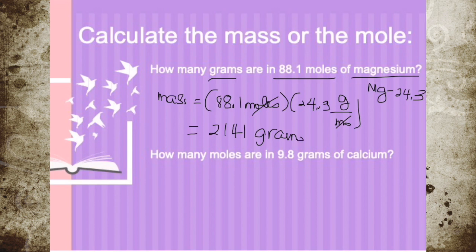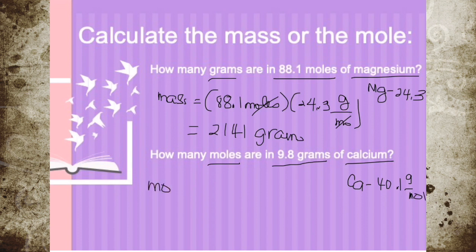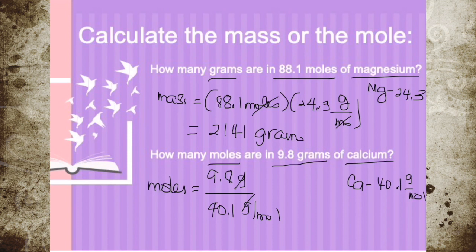Next example: how many moles are in 9.8 grams of calcium? First, check the molar mass of calcium on the periodic table — calcium has a molar mass of 40.1 grams per mole. The formula for moles equals grams over molar mass, so 9.8 grams divided by 40.1 grams per mole. Grams cancel out, giving us 0.24 moles.